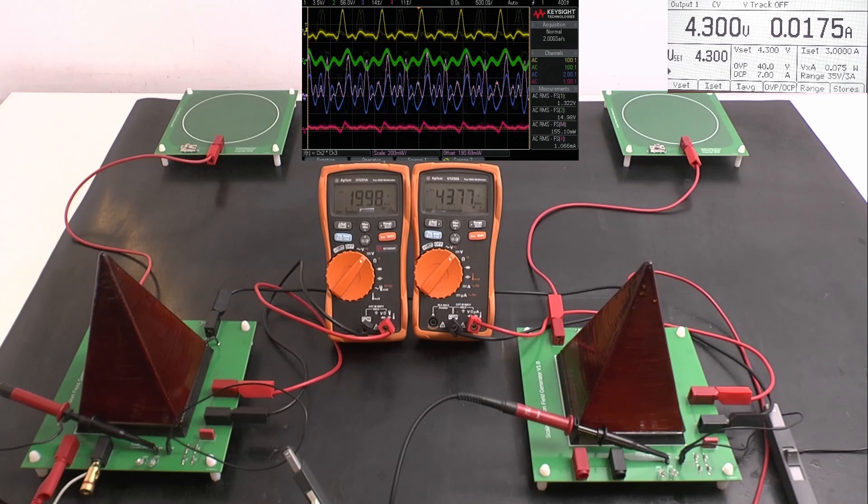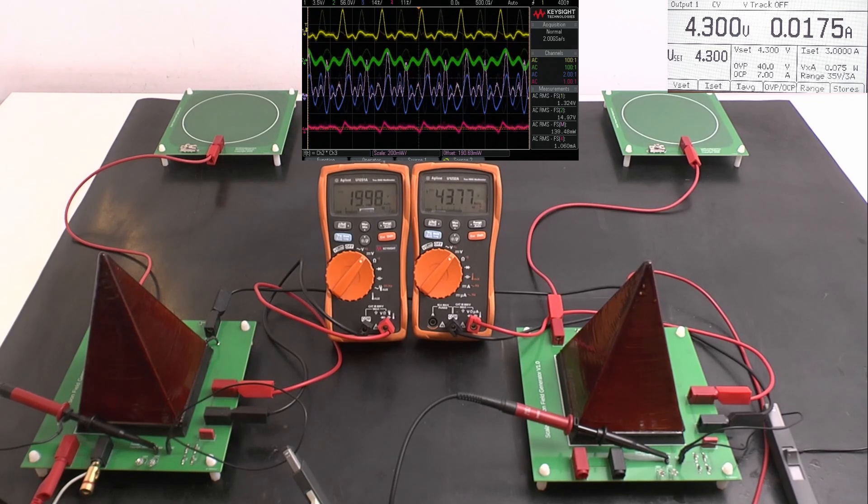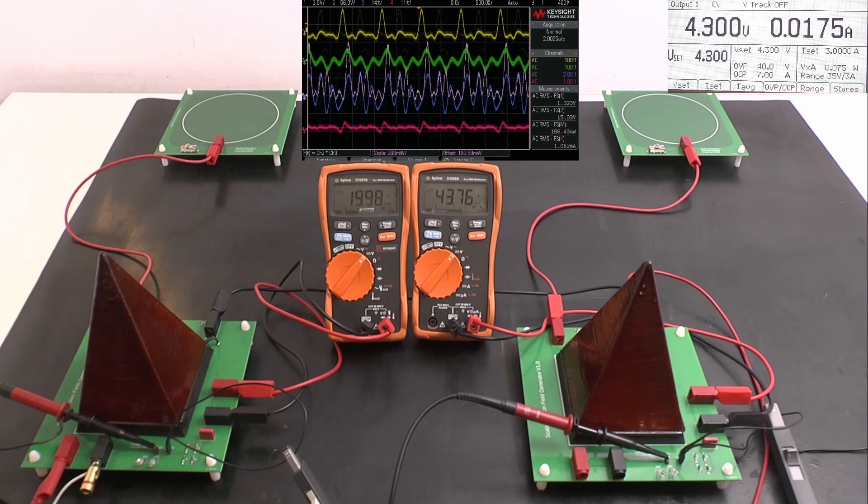So this concludes my comparison between the linear and the non-linear system between normal scalar waves—we could have used normal solenoid coils as well—and the scalar torsion field system I did design. I thank you very much for watching. Until the next time and goodbye.